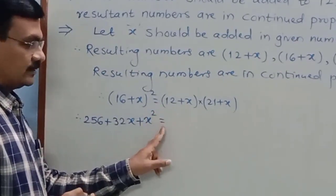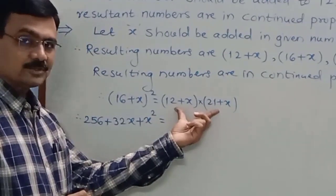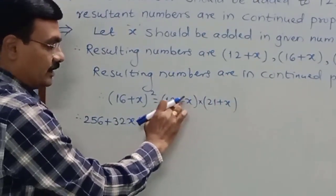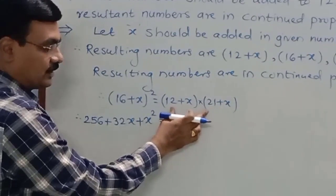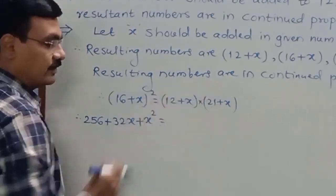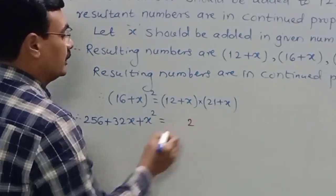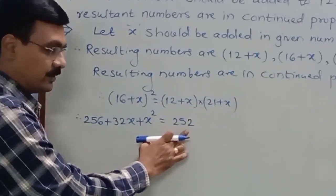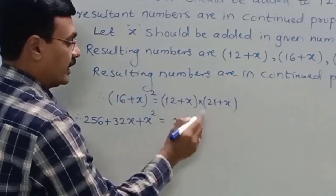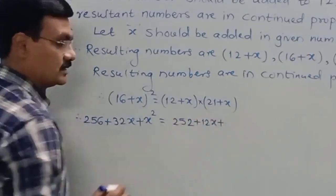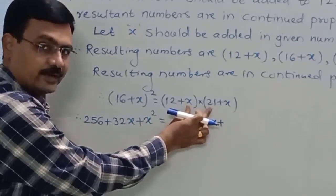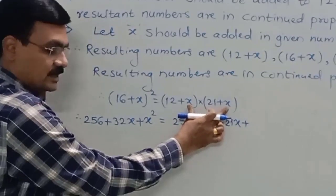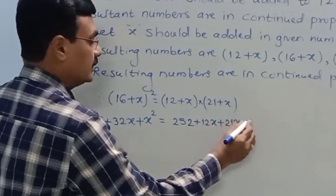On the right-hand side of the equal sign, there are two brackets — the multiplication of (12 plus x) and (21 plus x). We multiply each term of the first bracket by each term of the second bracket. 12 multiplied by 21 is 252. Then 12 multiplied by x gives 12x, plus 21 multiplied by x gives 21x, plus x multiplied by x gives x squared.